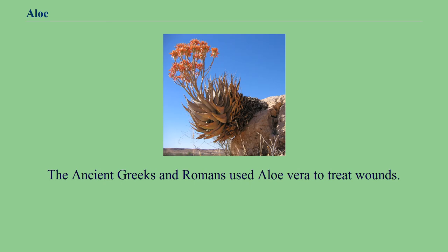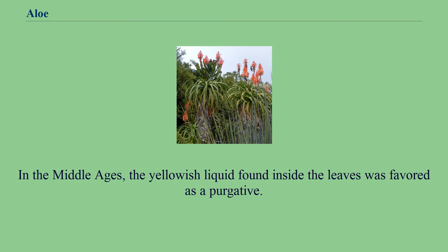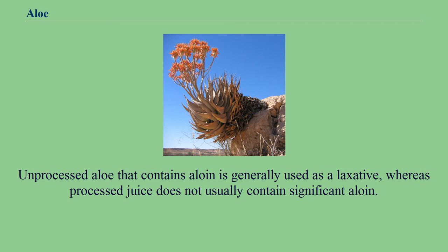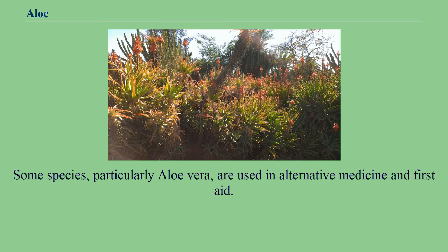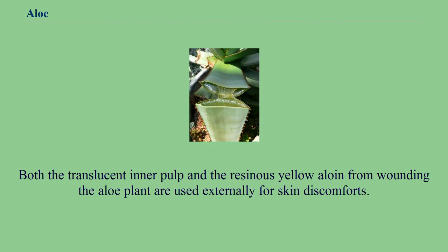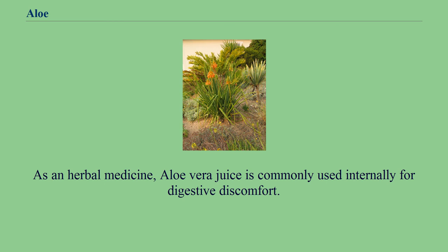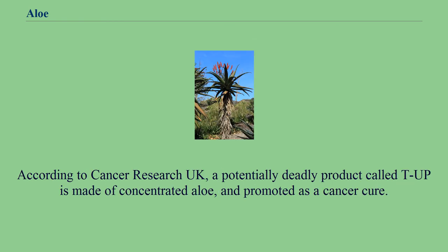The ancient Greeks and Romans used aloe vera to treat wounds. In the Middle Ages, the yellowish liquid found inside the leaves was favored as a purgative. Unprocessed aloe that contains aloin is generally used as a laxative, whereas processed juice does not usually contain significant aloin. Some species, particularly aloe vera, are used in alternative medicine and first aid. Both the translucent inner pulp and the resinous yellow aloe latex from wounding the aloe plant are used externally for skin discomforts. According to Cancer Research UK, a potentially deadly product called T-Up is made of concentrated aloe and promoted as a cancer cure, though there is currently no evidence that aloe products can help prevent or treat cancer in humans.